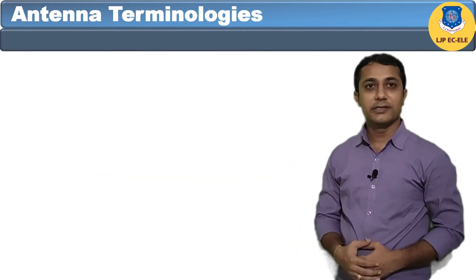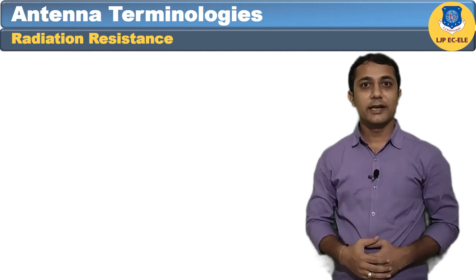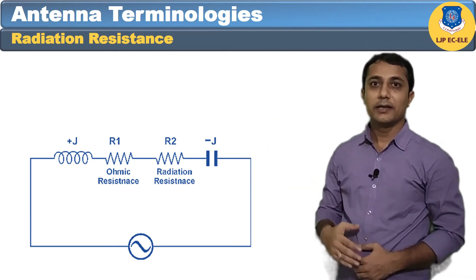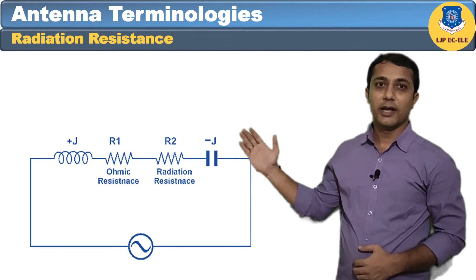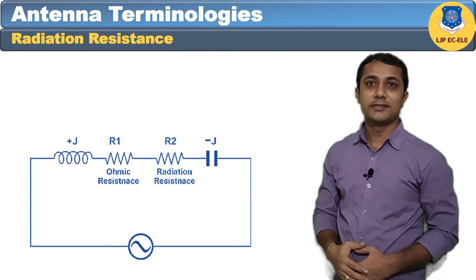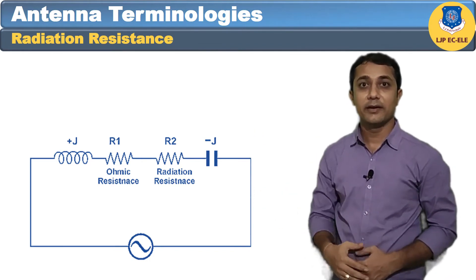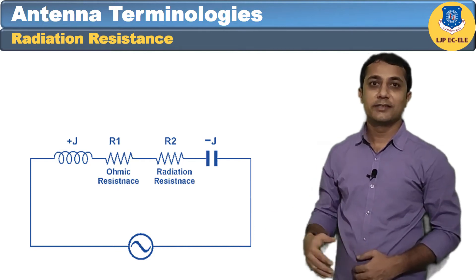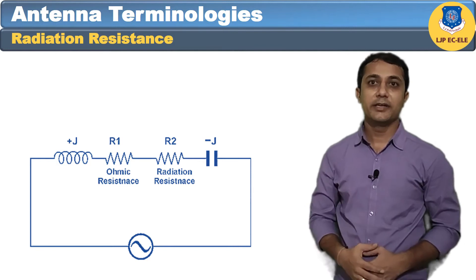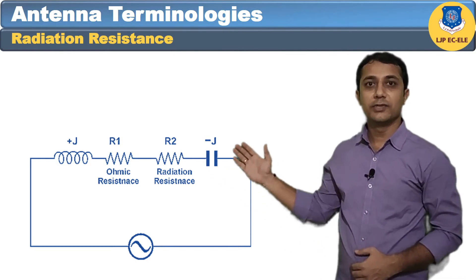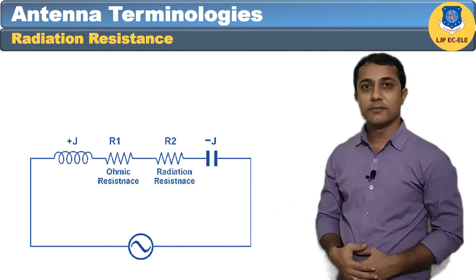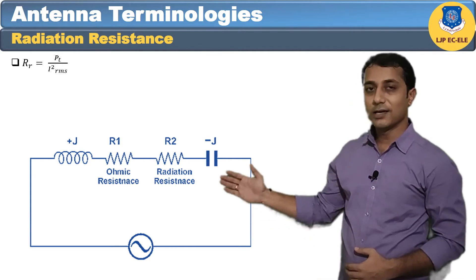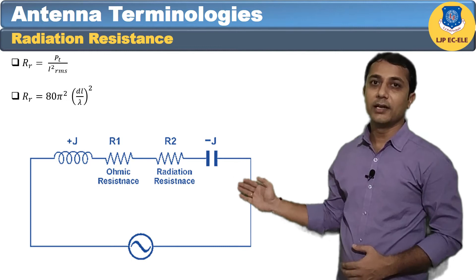The next terminology is radiation resistance. It is the radiated power being dissipated in a fictitious resistance. It is defined as the ratio of power radiated by the antenna to the square of the current at the field point. In simple words, it is a fictitious resistance which, when substituted in series with the antenna, will consume the same power as actually radiated. The formula is: Rr = Pt / I²(rms), or Rr = 80π² (dl/λ)².